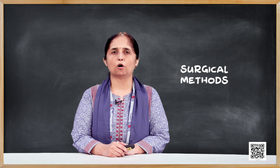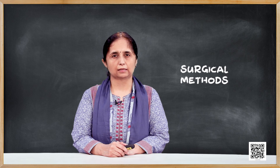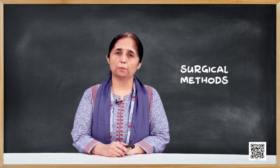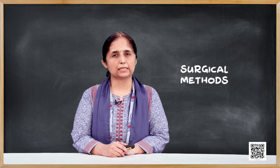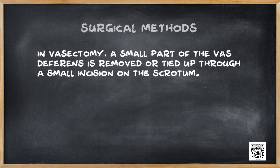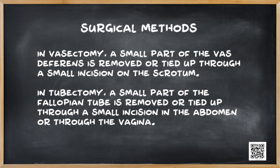Using surgical methods for contraception is also called sterilization. They are generally advised for the male or female partner as a terminal method — that is, if the couple does not want to have a baby anymore. Surgical intervention blocks gamete transport and thereby prevents conception. The sterilization procedure is called vasectomy in males and tubectomy in females. In vasectomy, a small part of the vas deferens is removed or tied up through a small incision. In tubectomy, a similar procedure is performed in the abdomen or through the vagina. These techniques are highly effective, but their reversibility is very poor.